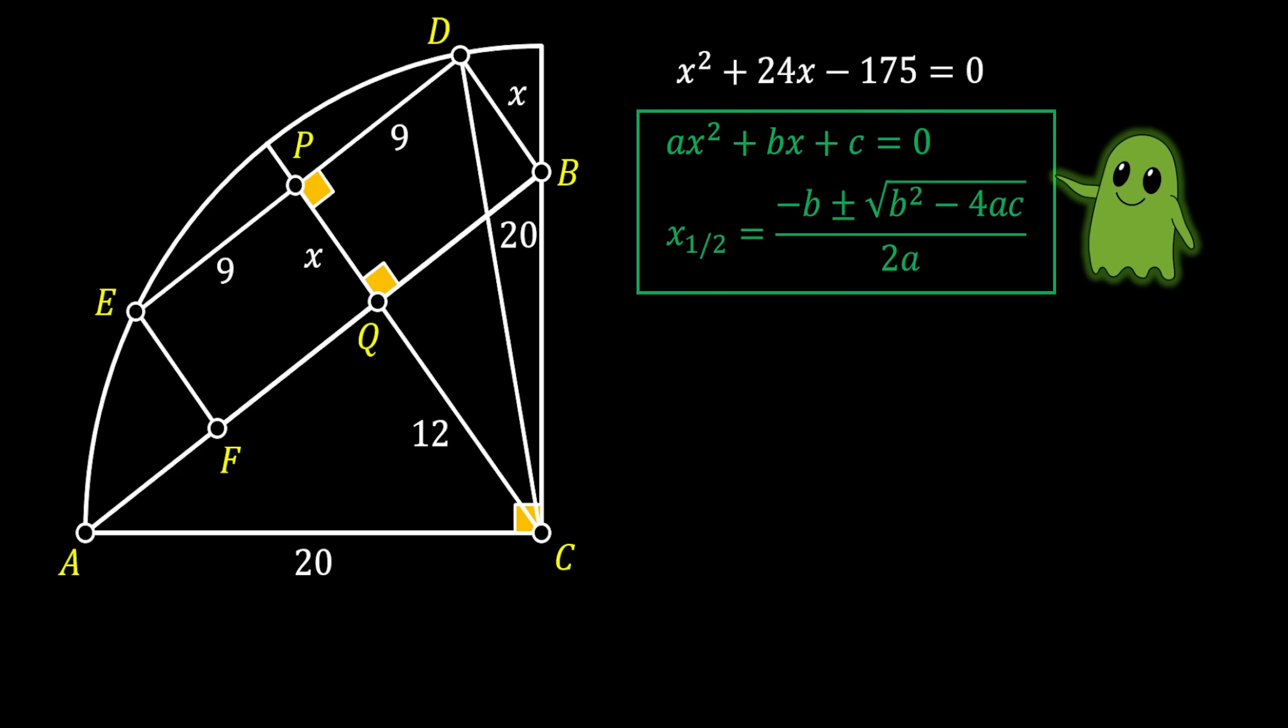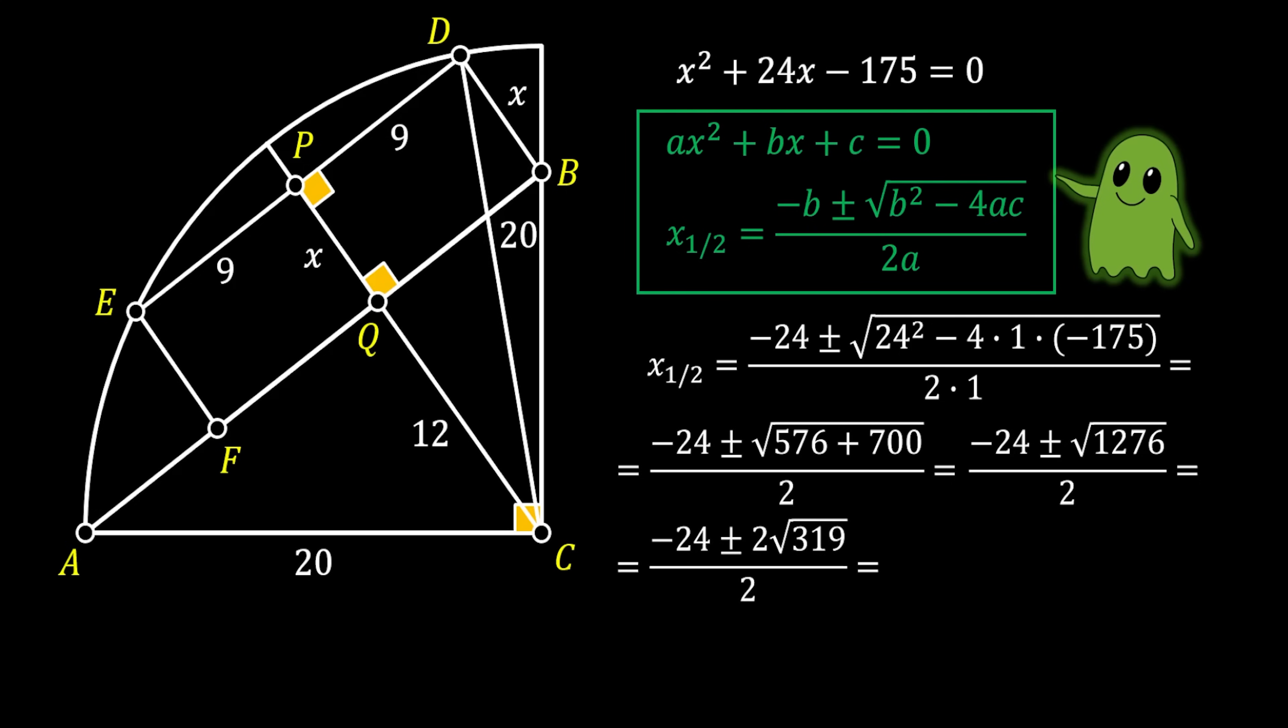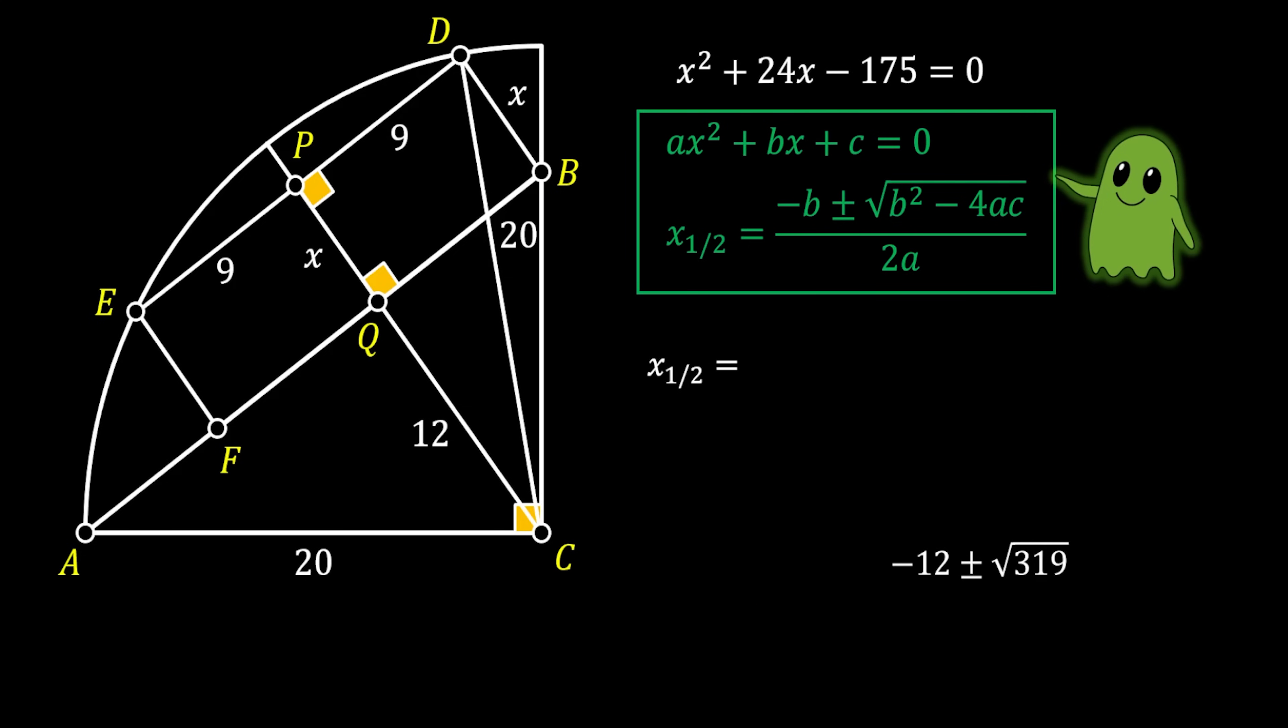So, we are just going to implement those values into our quadratic formula. Now, since a lot of you guys asked me in the comments to do this step by step, I am going to show you the detailed calculation how to get to the values of x. So, first, you are going to simplify the things underneath the square root and get 1276. This will simplify to 2√319. Now, we can simplify everything with 2 and get the solution of -12 ± √319.